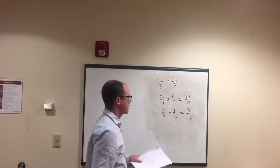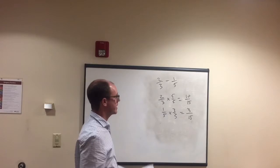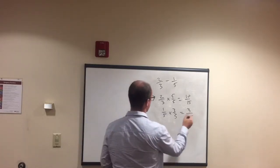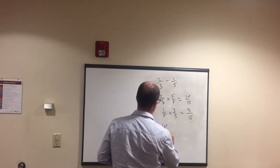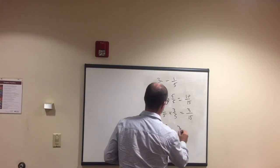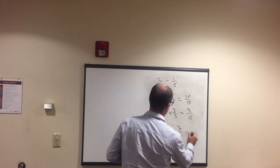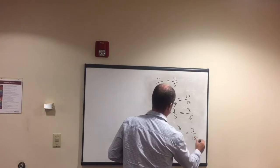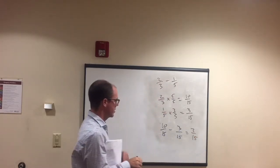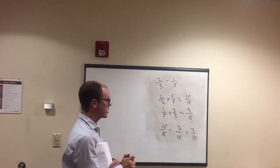One fifth times 3 over 3 equals 3 over 15. Okay. And now, on the last one, we added them and it became 13 fifteenths. In this case, we'll subtract them. 10 over 15 minus 3 over 15 equals 7 over 15. So, that's how you do it.